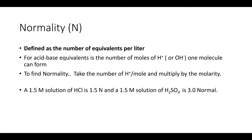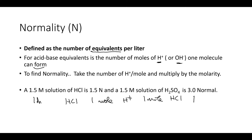Normality is something you might see on the MCAT. It's the number of equivalents — specifically the number of moles of H⁺ or OH⁻ a molecule can form. For HCl, we have one mole of H⁺ for every one mole of HCl, so a 1 molar HCl solution is also 1 normal. A solution is not 1 normal when there is more than one H⁺ per formula unit.